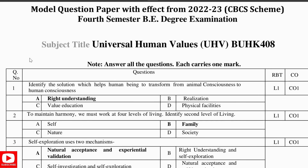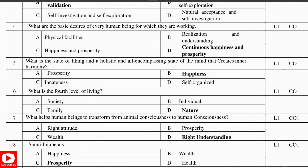Question 1: Identify the solution which helps human beings to transfer from animal consciousness to human consciousness. Answer: Right understanding. Question 2: To maintain harmony we must work at four levels of living. Question 3: The second level is family. Question 4: Self-exploration uses two mechanisms — natural acceptance and experimental validation. Question 4: What are the basic desires of every human being for which they are working? Answer: Continuous happiness and prosperity.